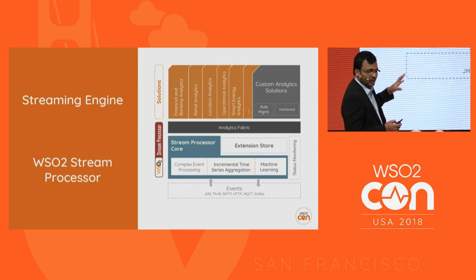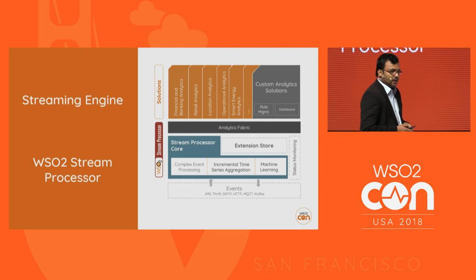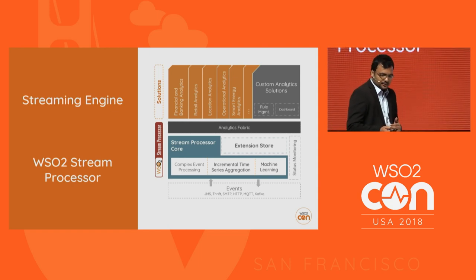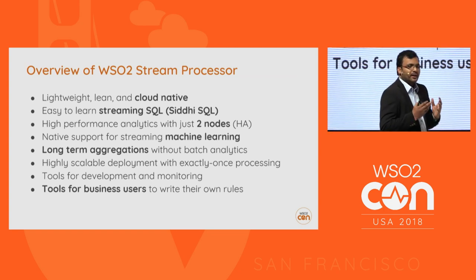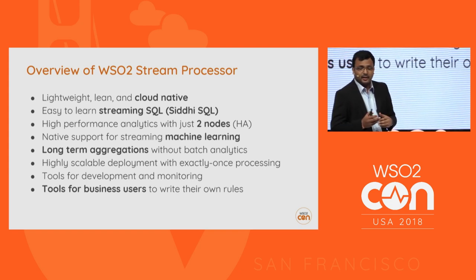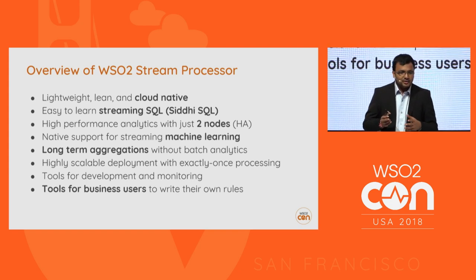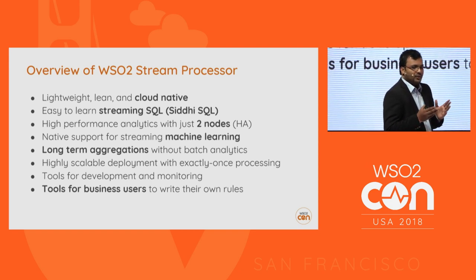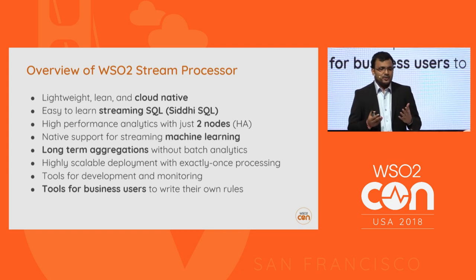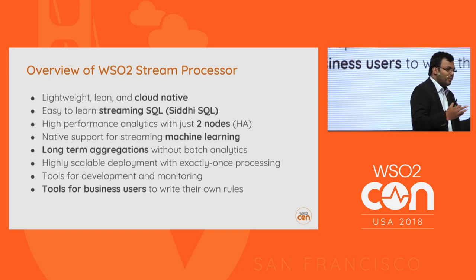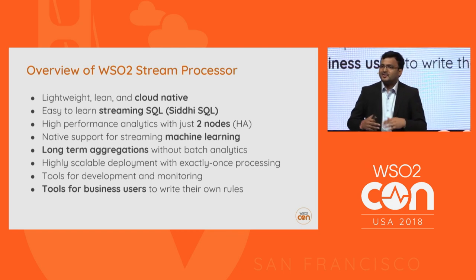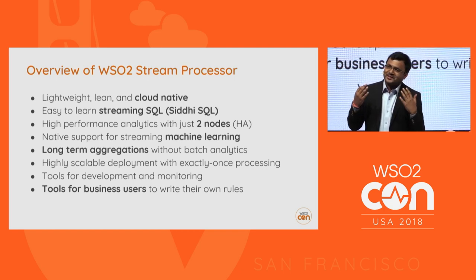WSO2 Stream Processor is an analytics offering provided by WSO2. It has complex event processing capabilities, incremental aggregation, and machine learning support. Key characteristics include its cloud-native, lightweight nature, and its streaming SQL language called CDSQL. It delivers high performance — around 100k events per second throughput with just two nodes when there are no database integration use cases. It also supports long-term aggregations, which replace the Spark-based approaches used in the past, and provides tools for business users to write streaming applications quickly.